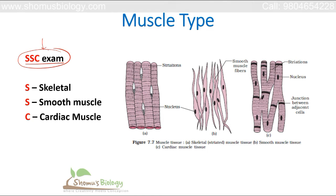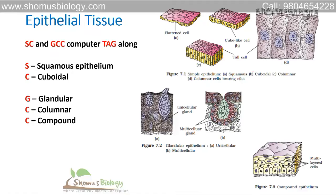We all know about the SSC — Staff Selection Commission exam. SSC stands for Skeletal, Smooth, and Cardiac muscle — three different types of muscle. Skeletal muscle, smooth muscle, and cardiac muscle are all different. They have different nucleus locations and different functions, but these are the three types of muscle you need to know.